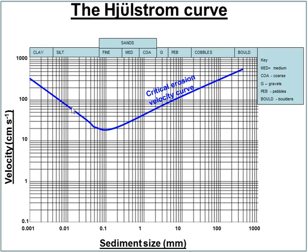The first line marked on it is the critical erosion velocity curve. This is the minimum velocity required for various sediments to be picked up and then subsequently transported by a river in a one-metre depth river. So if you took this particular clay particle here at 0.002 millimetres, that would require a velocity of 200 centimetres per second.